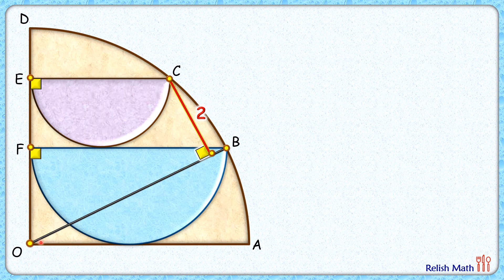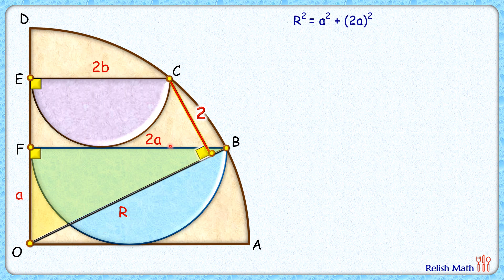Let's assume the radius of the quadrant is r cm. The radius of the blue semicircle is a cm, so its diameter is 2a. For the purple semicircle the diameter is 2b. Our first step is to find the relation between r, a, and b. Considering right angle triangle OFB, the FO length will be a cm. Applying Pythagoras theorem we get r² = a² + (2a)² = 5a², so r = √5 · a.